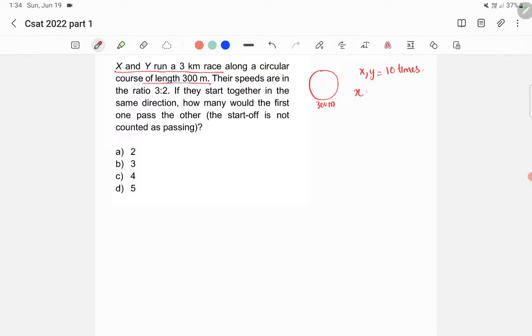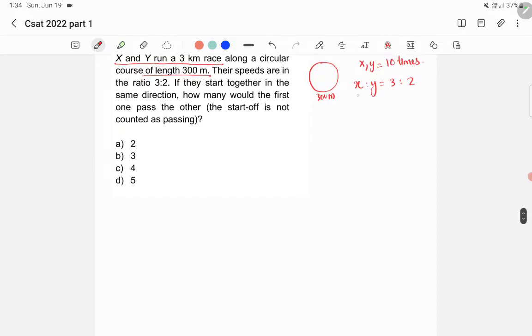Now the ratio of speed of X and Y is 3 to 2, which means X is faster than Y. When X completes 300 meters, Y will be completing only 200 meters.